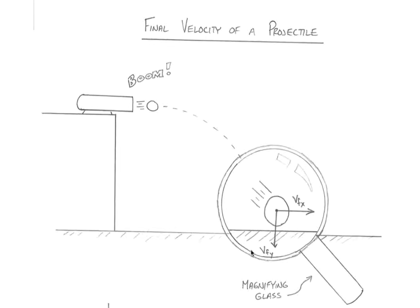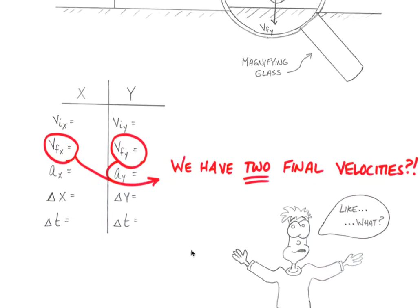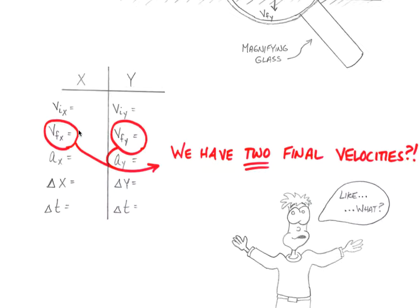I've magnified the ending condition and drawn the velocity vectors to show that the object is moving both forwards with some x velocity and downward at the end of its motion — it's moving down because of gravity, forward because it was launched from the cannon. So if we list all our variables in x and all in y, and we're asked for the final velocity of the projectile, there's a problem: we have a final x velocity and a final y velocity. If we have two final velocities, how can we provide a single value?